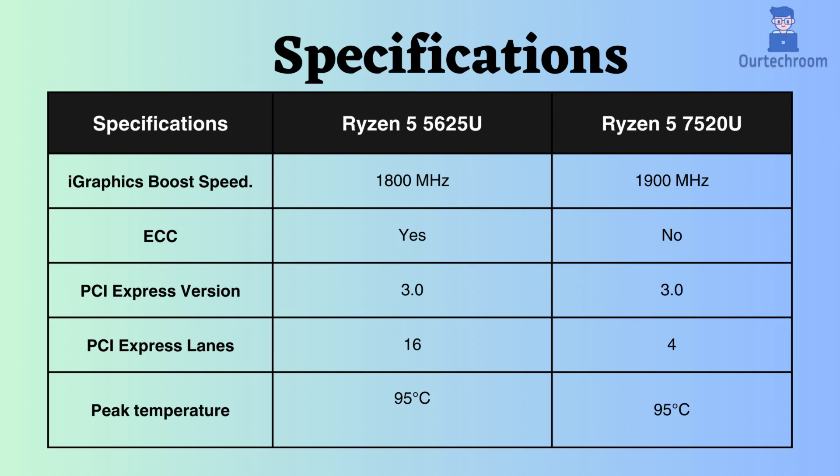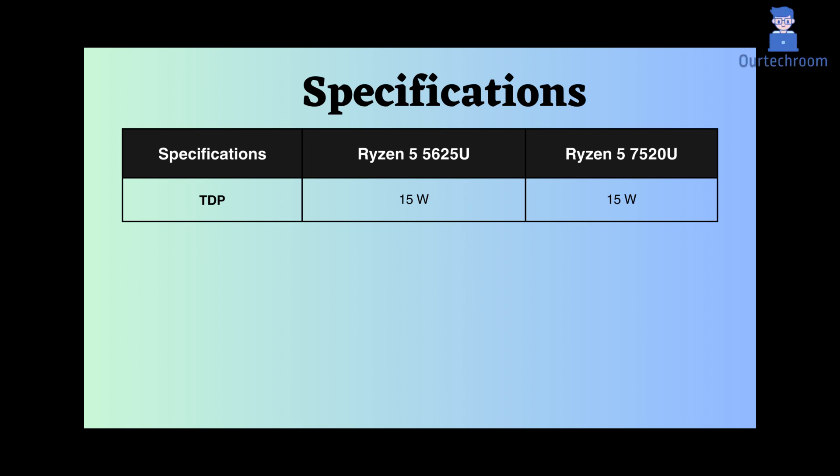The peak temperature support for both processors is 95 degrees Celsius. The TDP of both processors is fixed at 15 watts, making them generally considered energy efficient for everyday tasks. They are designed for thin and light laptops, ensuring good battery life.